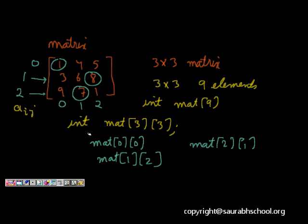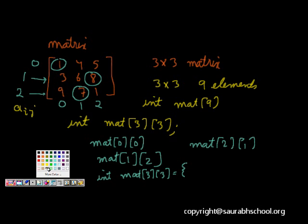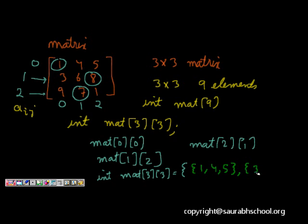To initialize the 2D matrix, you write: int mat[3][3] = {{1,4,5}, {3,6,8}, {9,7,1}}. Each row is represented by inner braces containing 3 elements, and we have 3 rows. This is how you initialize a two-dimensional matrix. That ends our lecture on 2D arrays.